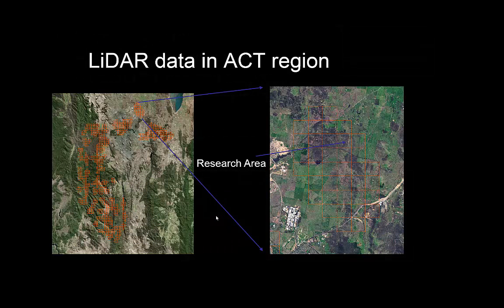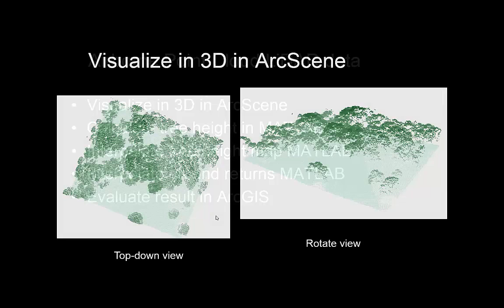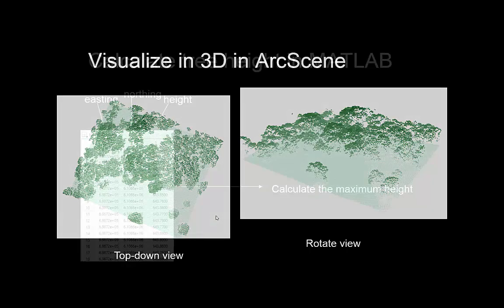Then we're going to look at some LiDAR data — also airborne LiDAR data — for the Canberra region, from Mulligan's Flat in particular, and do some similar things. First we're going to visualize the point cloud in ArcGIS, calculate tree heights in MATLAB, interpolate them into tree height maps, and also interpolate the ground surface. Then we'll import and evaluate that in ArcGIS — this is the sort of thing you should be seeing on your screen later on.